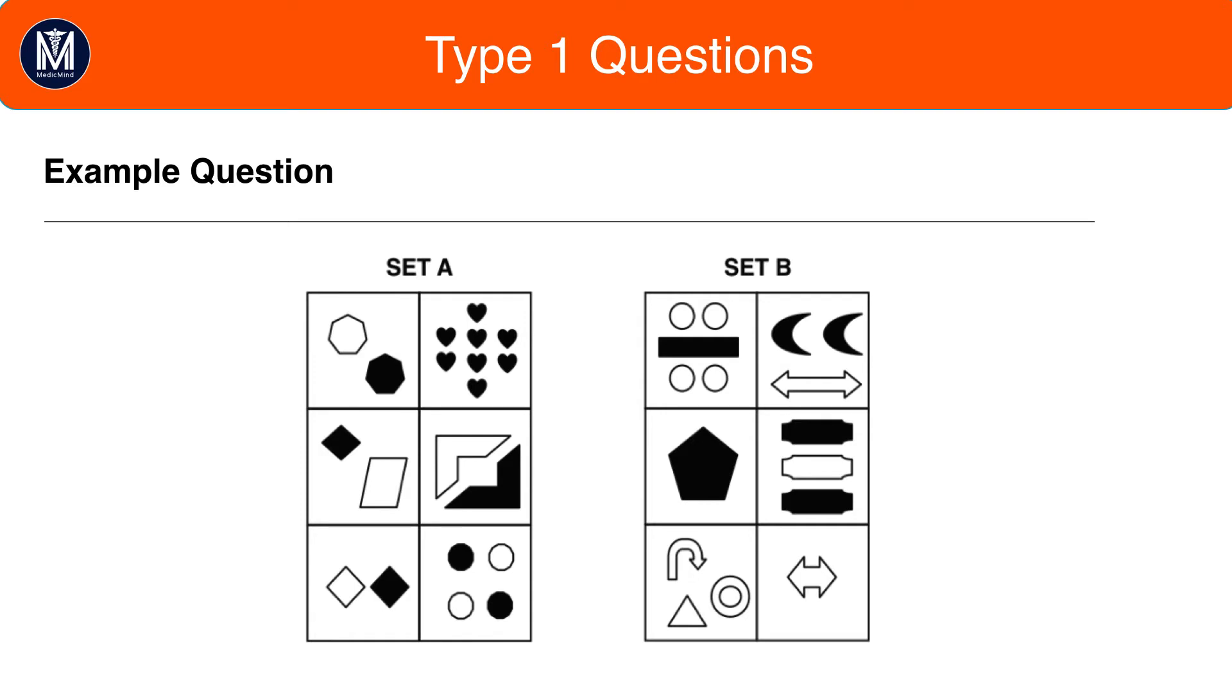For this question, the pattern in Set A is that there's an even number of shapes, and the pattern in Set B is that there's an odd number of shapes. Colour is a distractor in this particular question.